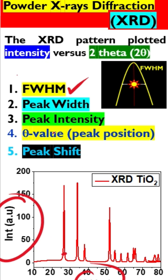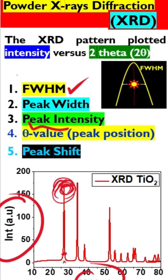The third important thing is the peak intensity, which is very important. This intensity shows what is the content of that material in that particular plane. The fourth thing is the theta value.